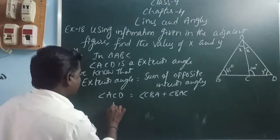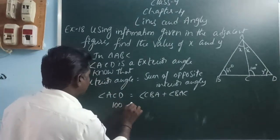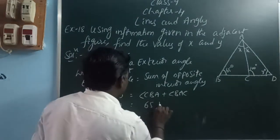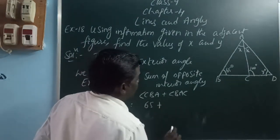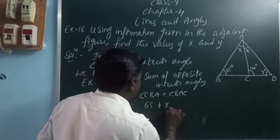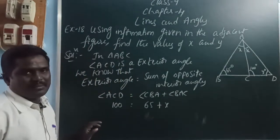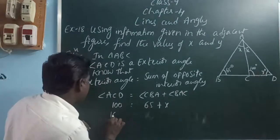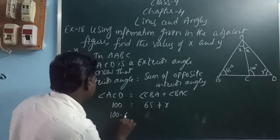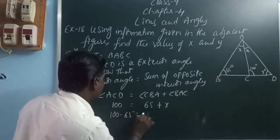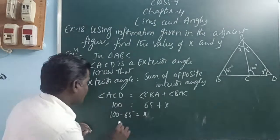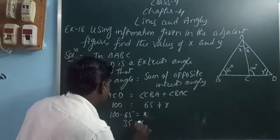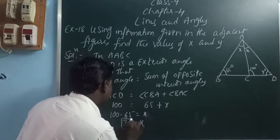Angle ACD is 100, angle CBA is 65, and angle BAC is X. So, 100 equals 65 plus X. Moving 65 to the left side: 100 minus 65 equals X. So X equals 35.